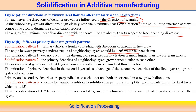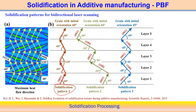In solidification pattern two, primary dendritic arms of neighboring layers grow perpendicular to each other. In the first layer, the maximum heat flow direction makes 60 degrees and is aligned with the easy growth direction ⟨011⟩ for FCC metal. The second layer follows with directions that are different, making 30 degrees, because scan directions differ between layers.